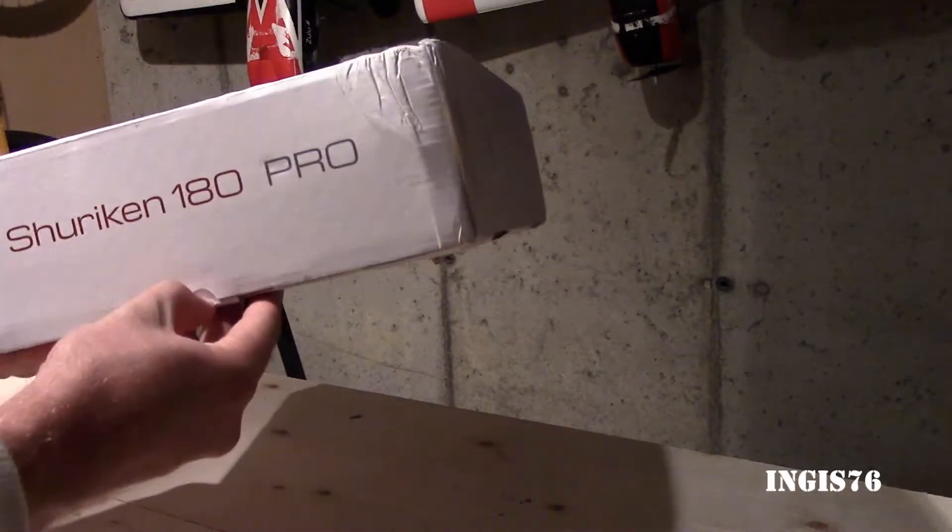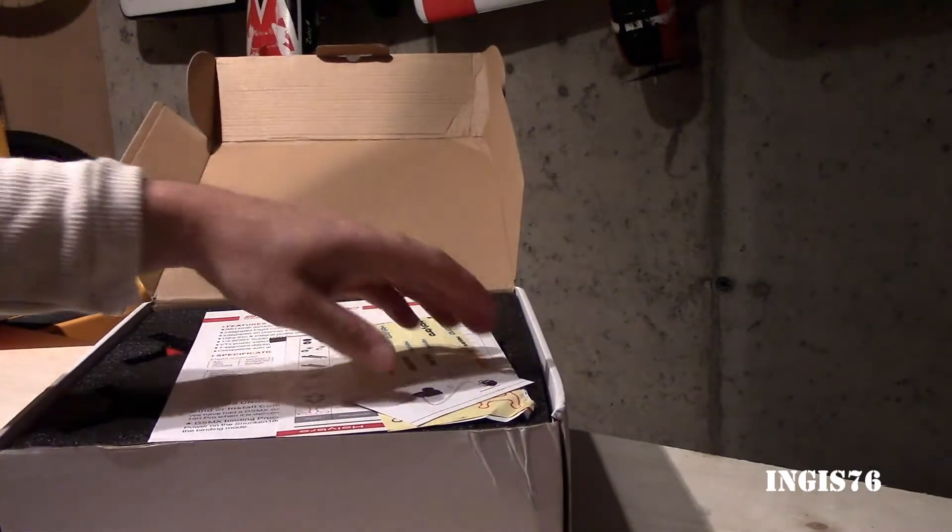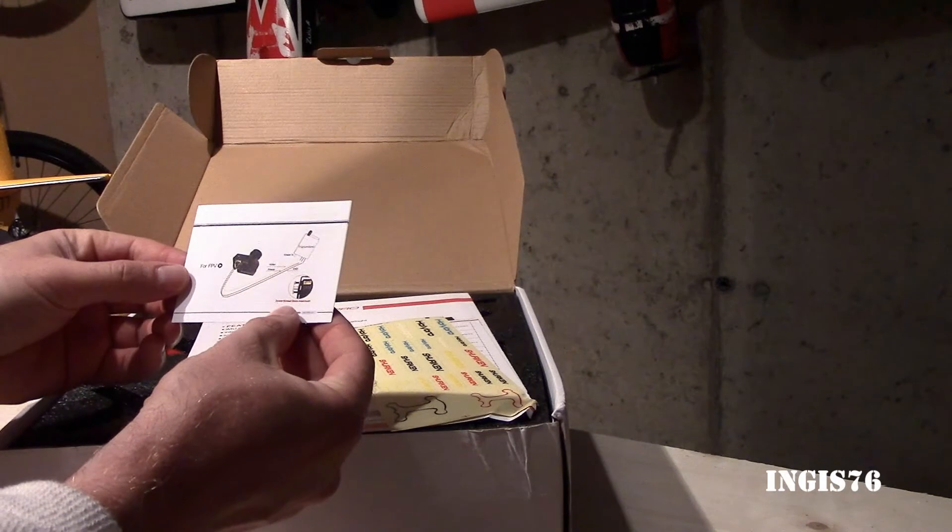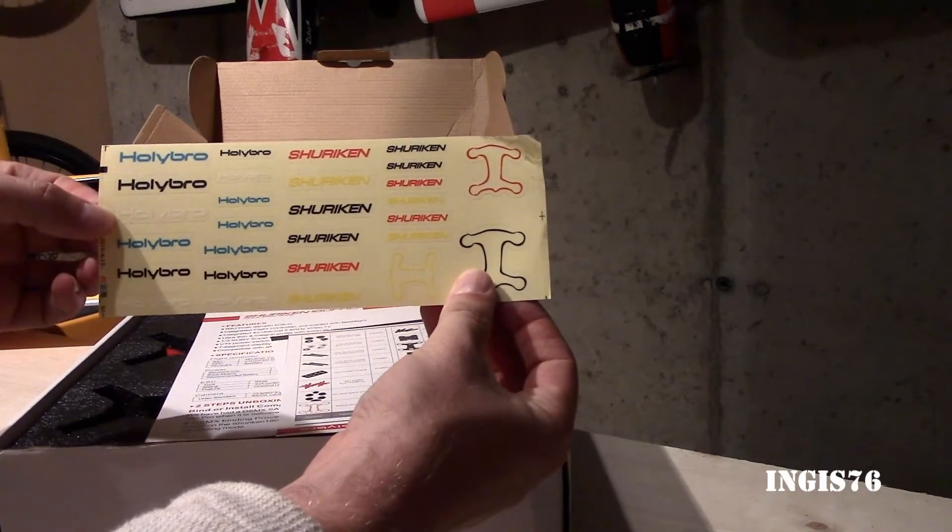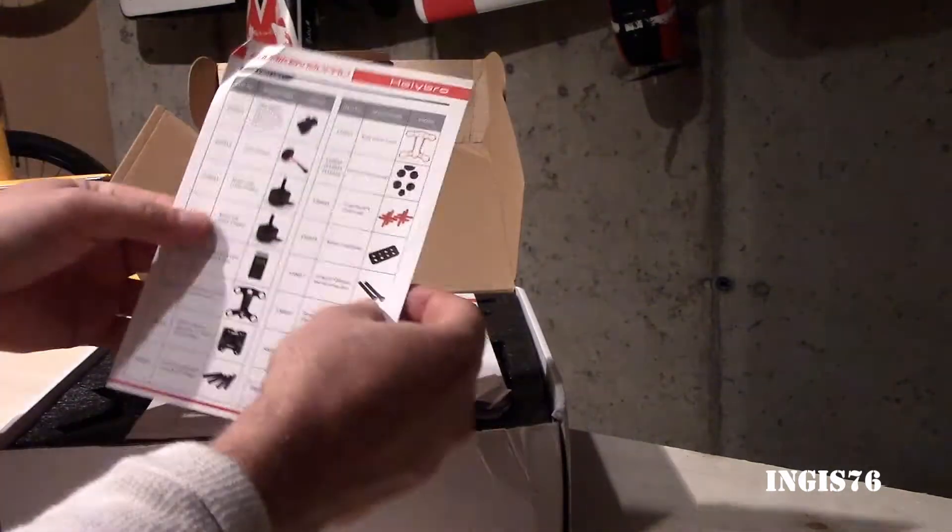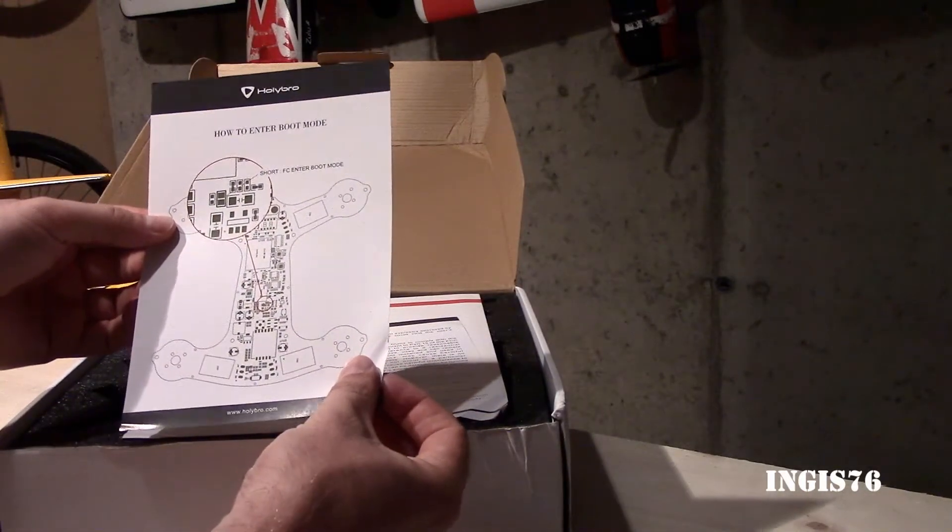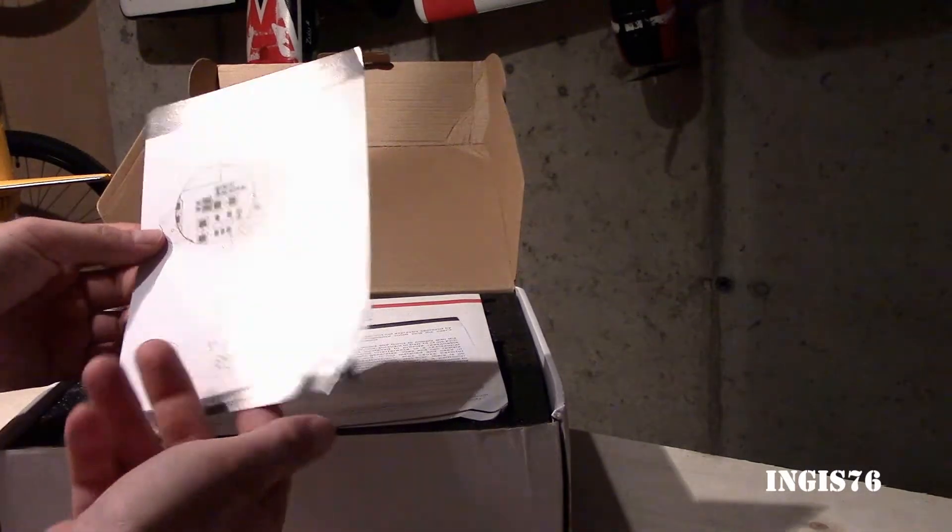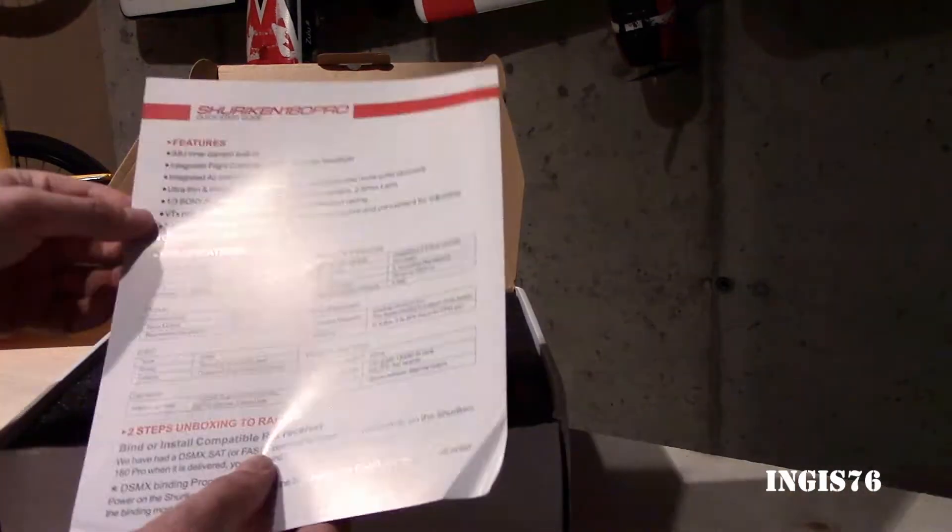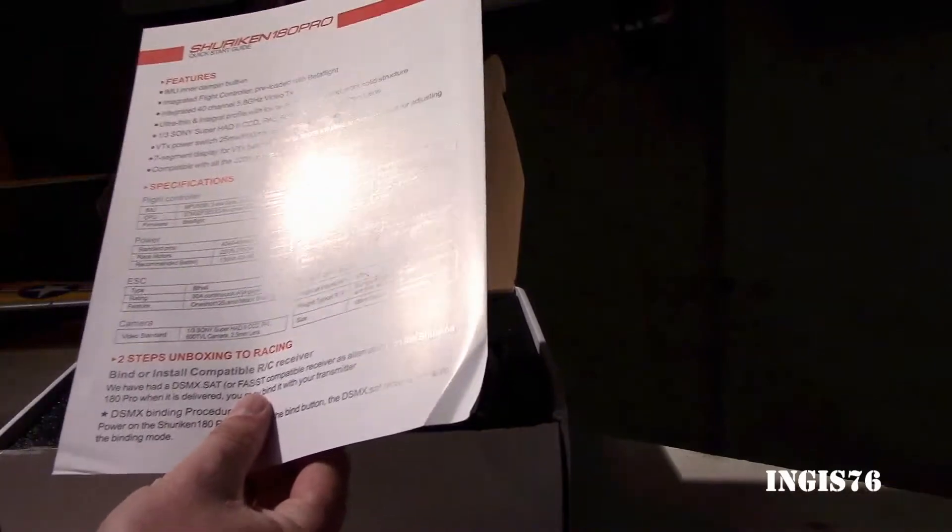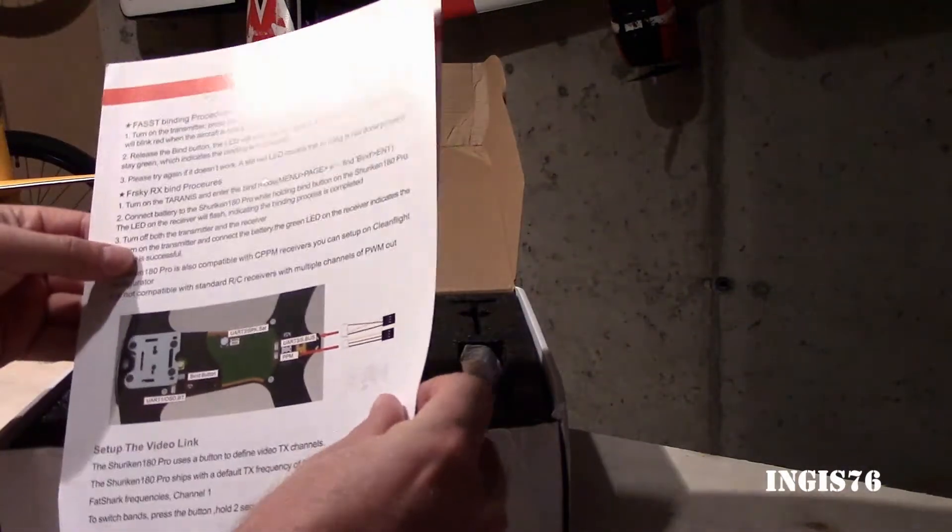But now we're gonna see what's inside the box. Here we have some FPV info, some Holybro shuriken stickers, a part list. And we have how to enter boot mode. It shows here how to enter the mode. And a warning. Let's read that later. And here is a quick start guide. This is how to bind and everything. I hope this will be very useful.